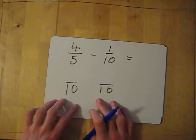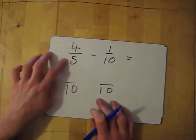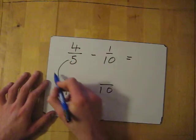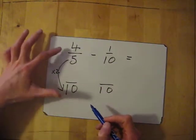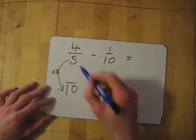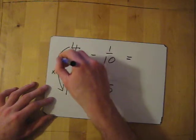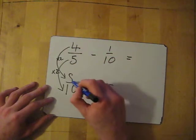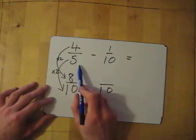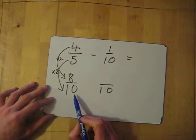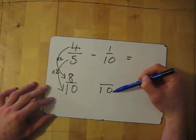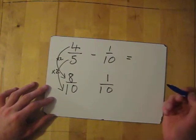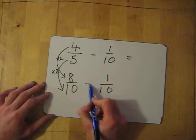Now we need to convert everything into tenths — equivalent fractions out of ten. With five, what have I done to turn it into ten? I've multiplied by two. Whatever I do to the bottom, I have to do to the top, so I times the top by two as well: four times two gives me eight. So four fifths is equivalent to eight tenths. The one tenth is already in tenths, so we don't need to change it.